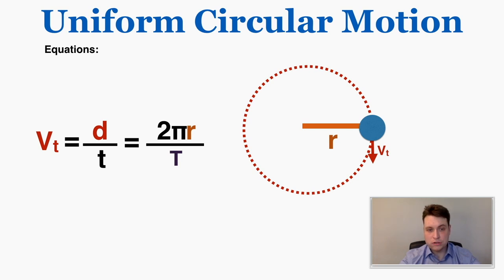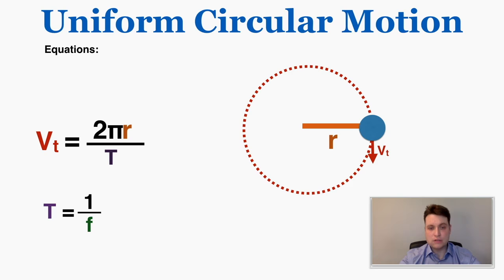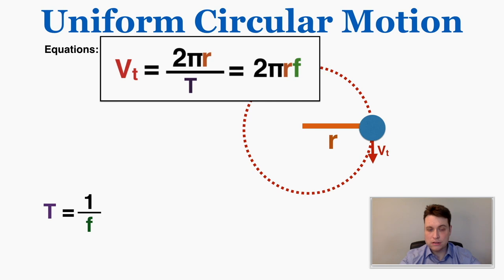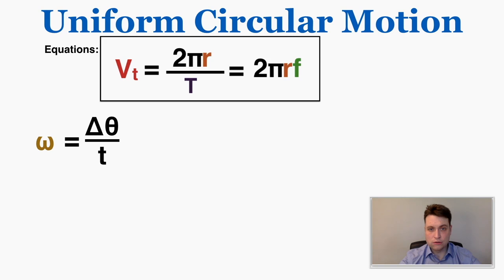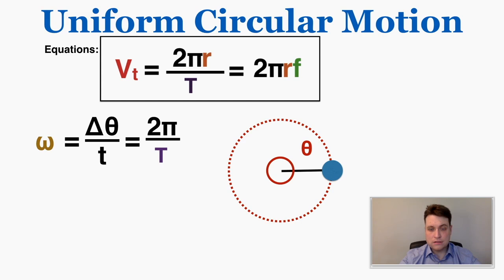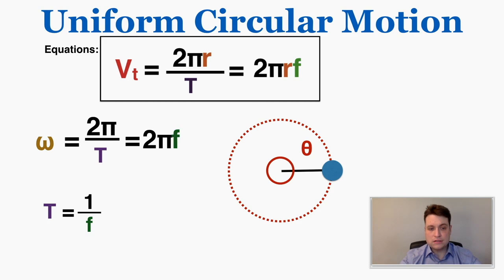Because the period T equals 1 over the frequency f, we can rewrite the equation as tangential velocity = 2πr × f. For angular velocity, we know it's radians per second — going all the way around the circle covers 2π radians in one period T. So angular velocity ω = 2π / T, and because T = 1/f, that can also be written as ω = 2πf.